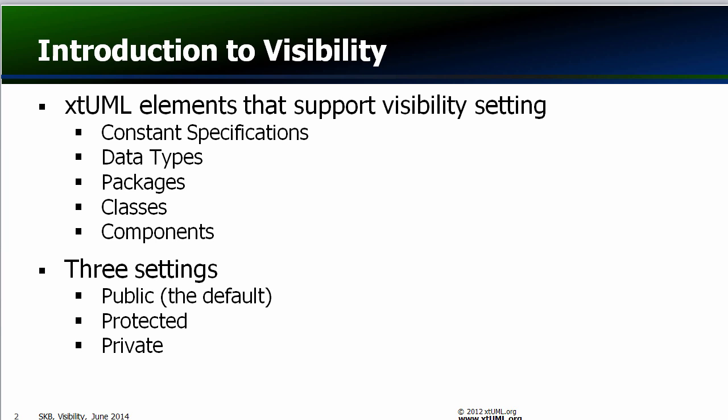On the UI canvases, the element name is preceded by an indicator to show the current visibility setting: Plus for Public, Minus for Private, and Hash or Pound for Protected.